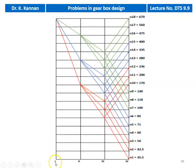In the first stage, between shaft 1 and 2, there are 3 output speeds. The input speed of 670 is reduced to give 3 speeds: 475, 280, and 170. From 475, there are again 3 output speeds reducing to 335, 280, and 236. From 280, the output speeds are 200, 170, and 140. From 170, the output speeds are 118, 100, and 85. So we have 9 output speeds at the end of the second stage.